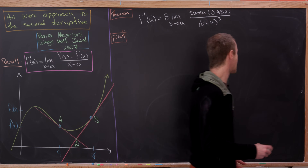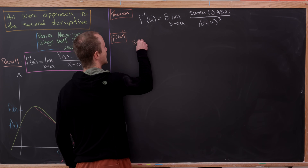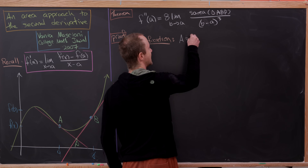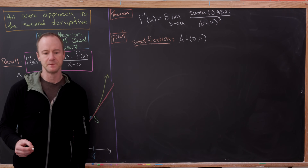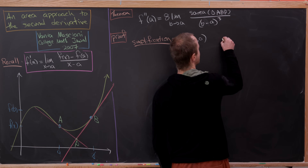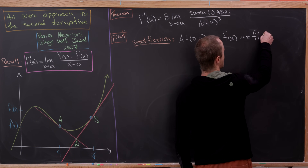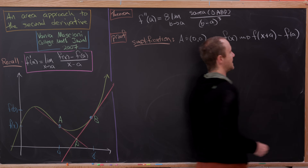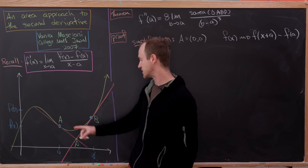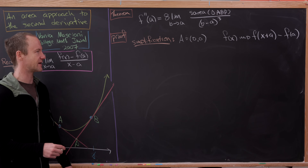Now that we've got this set up, let's get started with a simplification: we'll assume that our point capital A is in fact just the origin. This may seem like a bit of a cop-out, but we could do this by redefining our function. Instead of having f(x), we replace it with f(x + a) minus f(a), which simply shifts the entire graph without changing the shape to put capital A at the origin, simplifying a lot of our calculation.